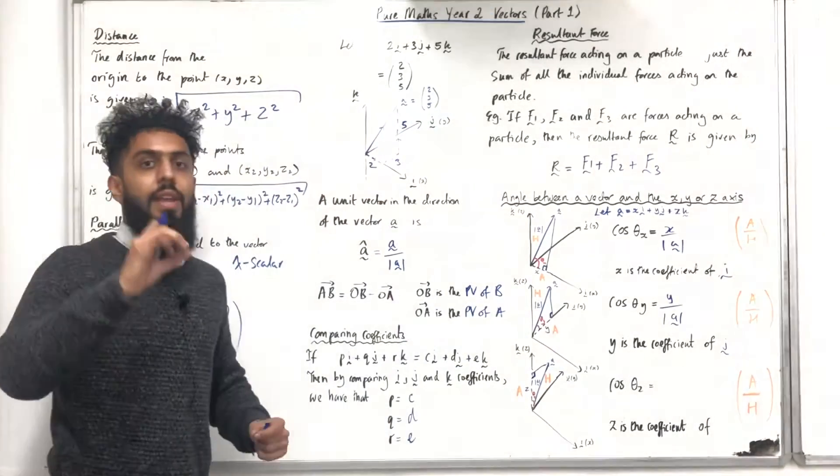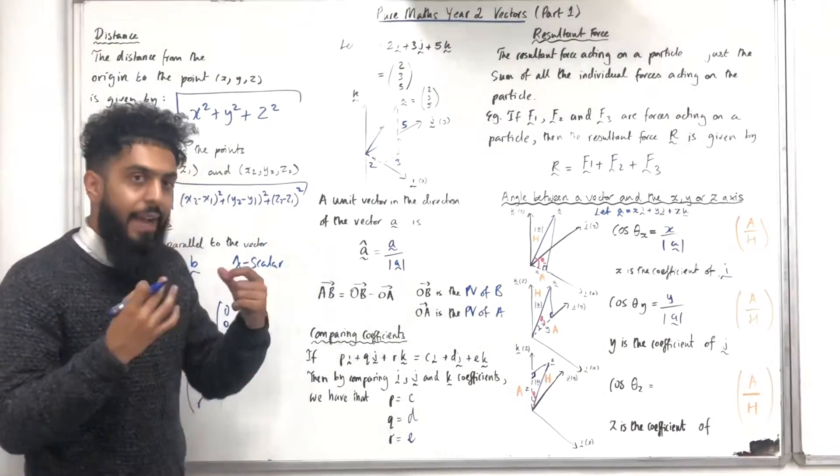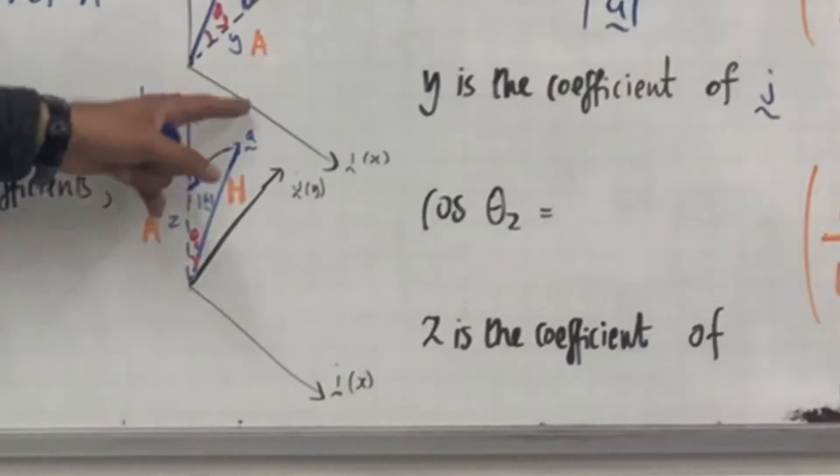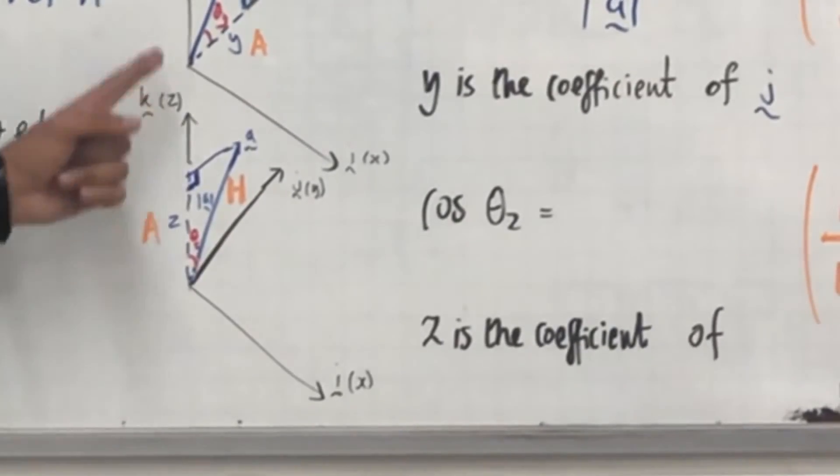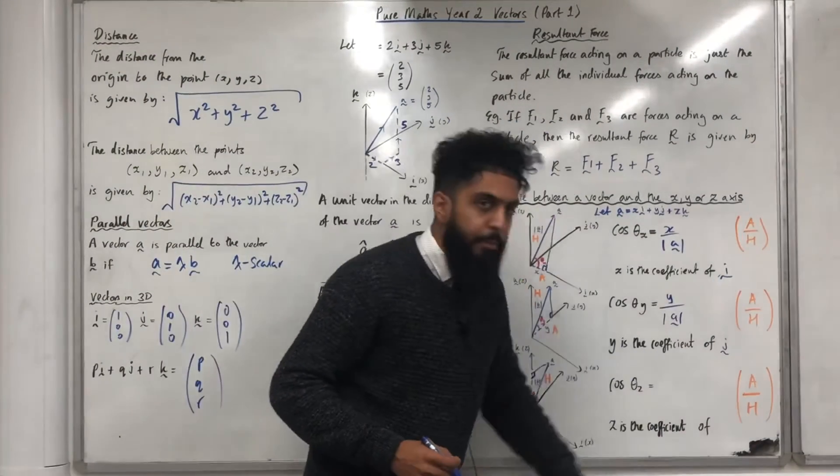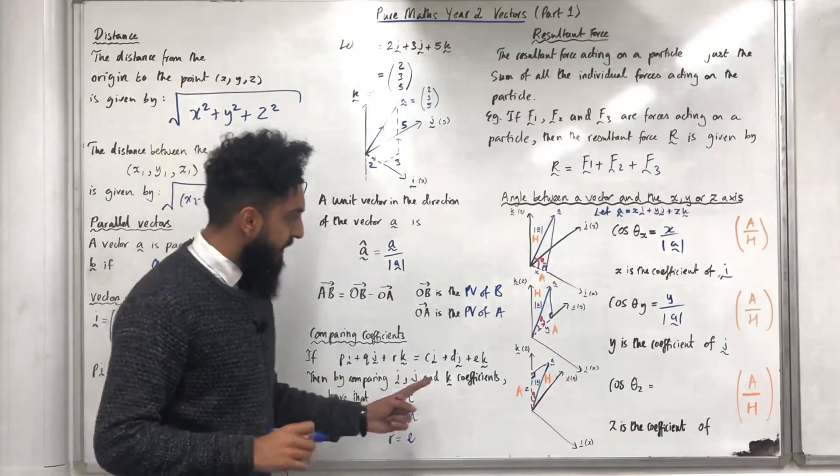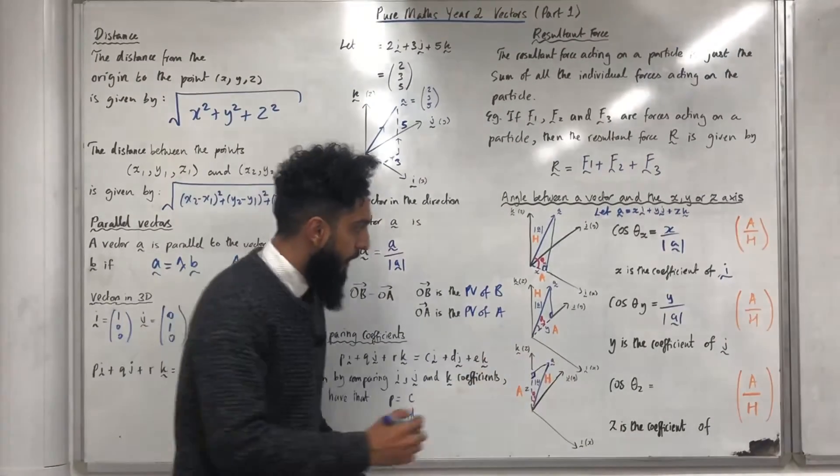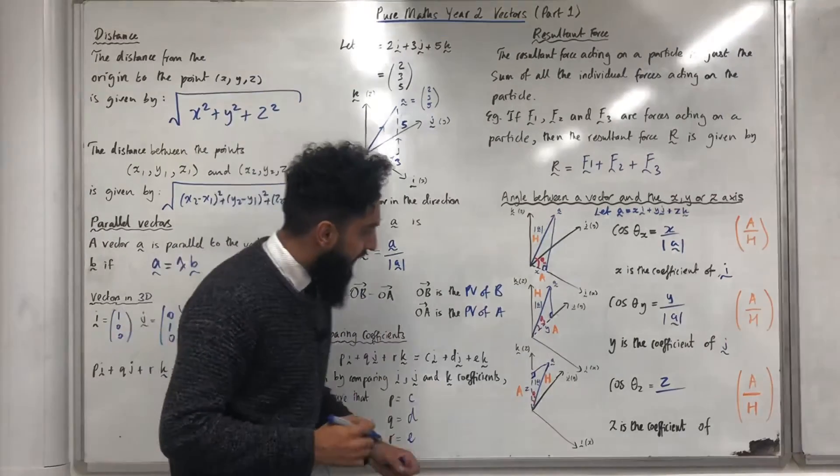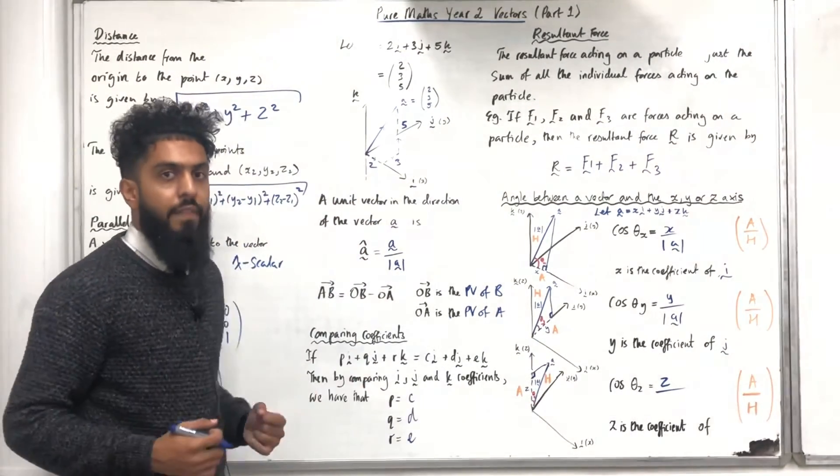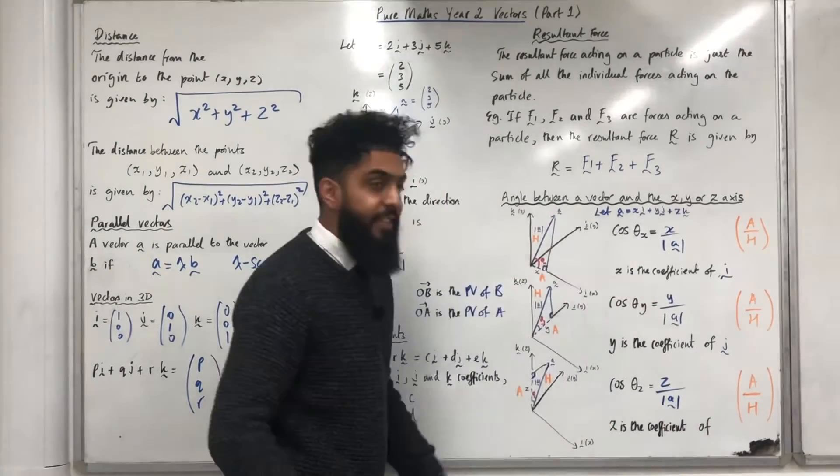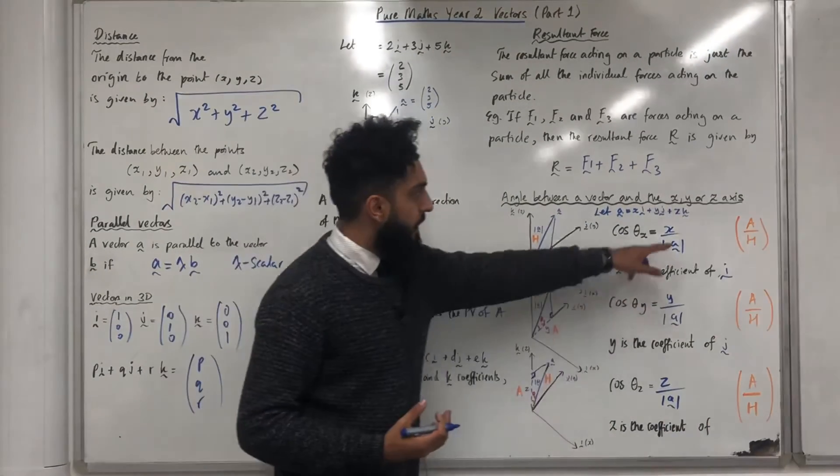Moving on to the last one. I want to work out the angle theta z, which is the angle between the vector a and the z-axis. I can work out cos theta z using adjacent over hypotenuse. The adjacent in this particular case is z. So we have z over the hypotenuse, which is again the magnitude of a. z is the coefficient of the vector k.